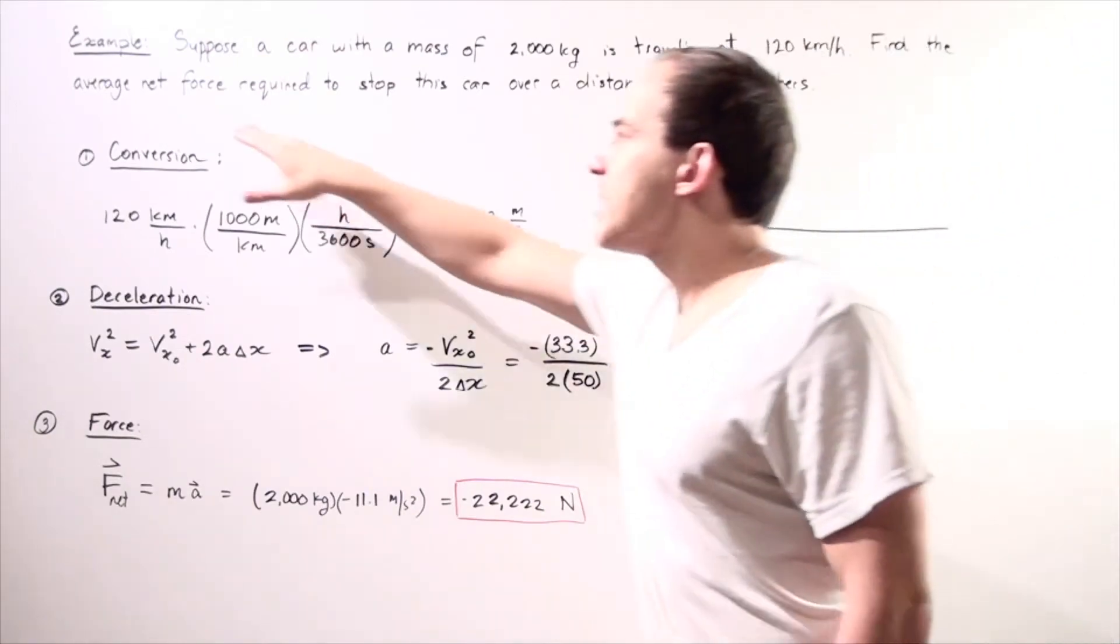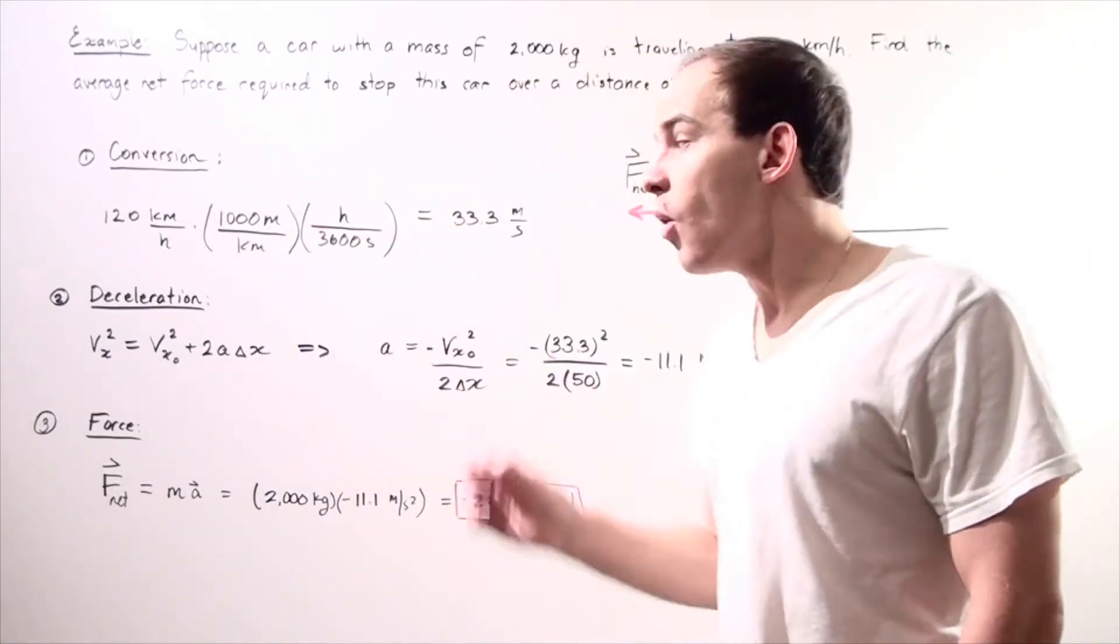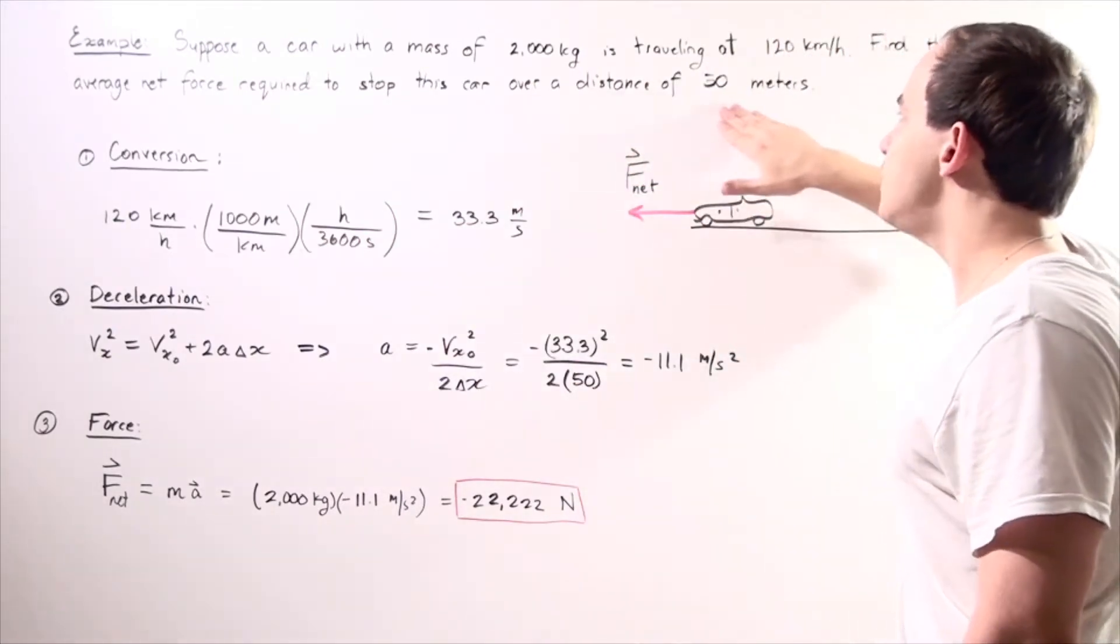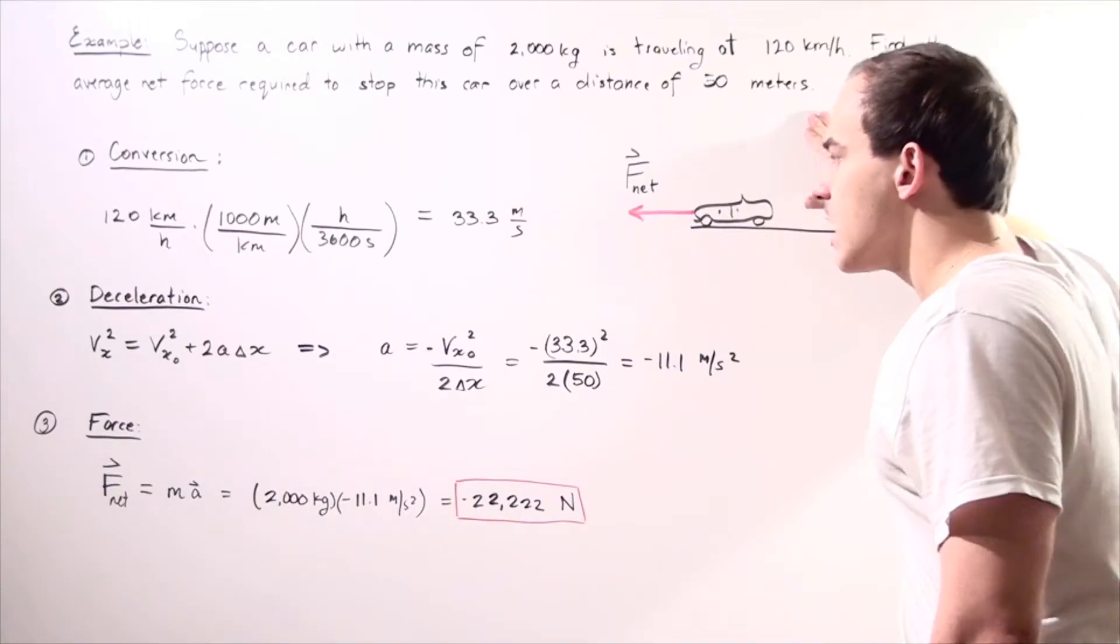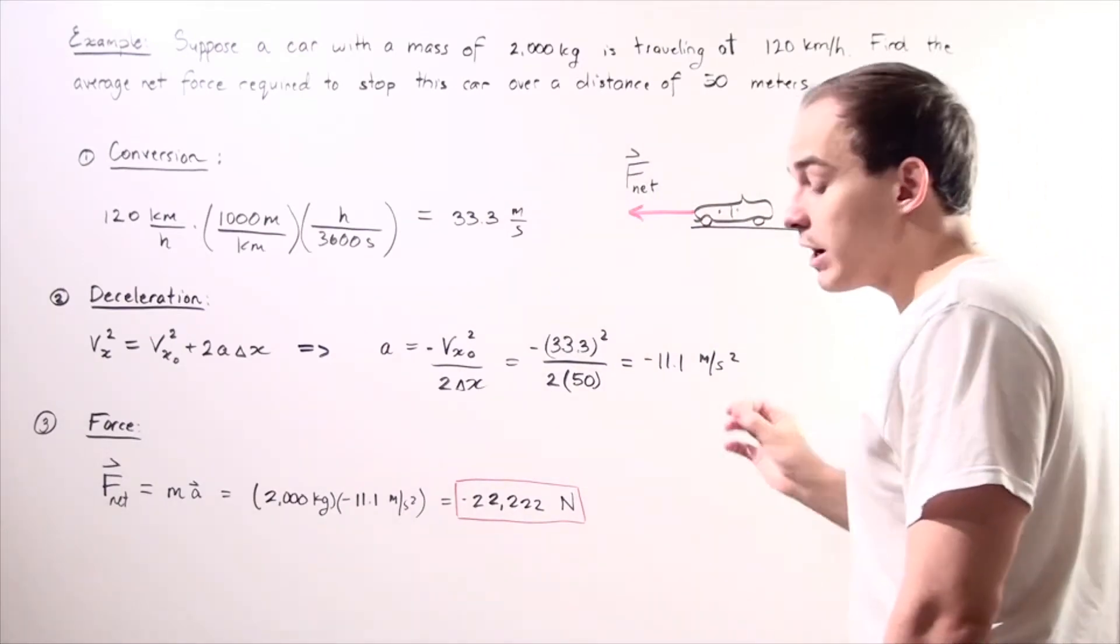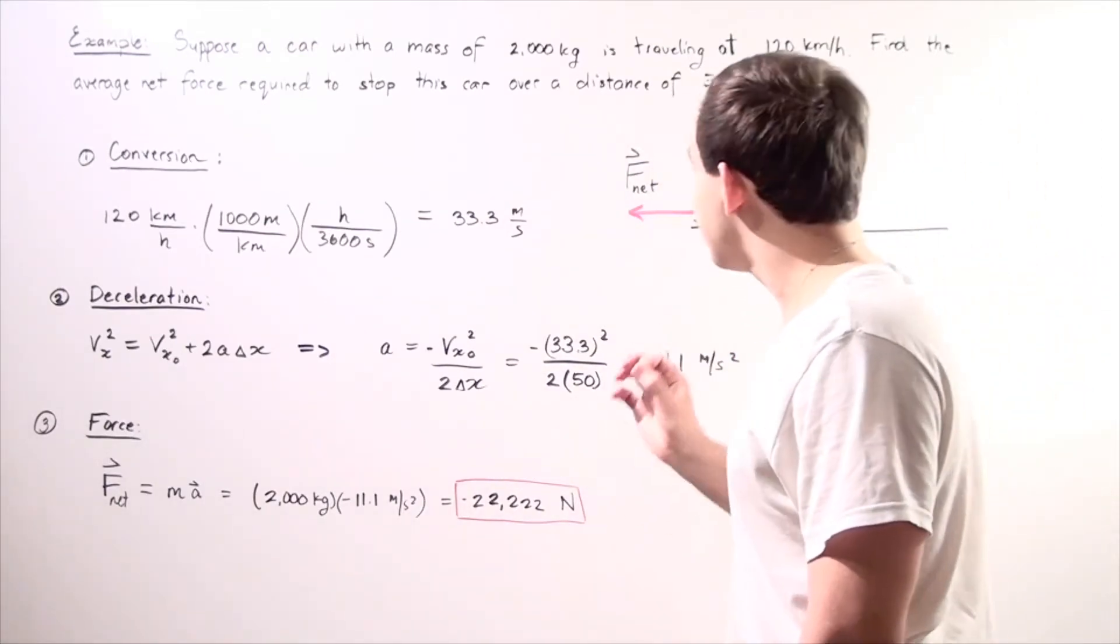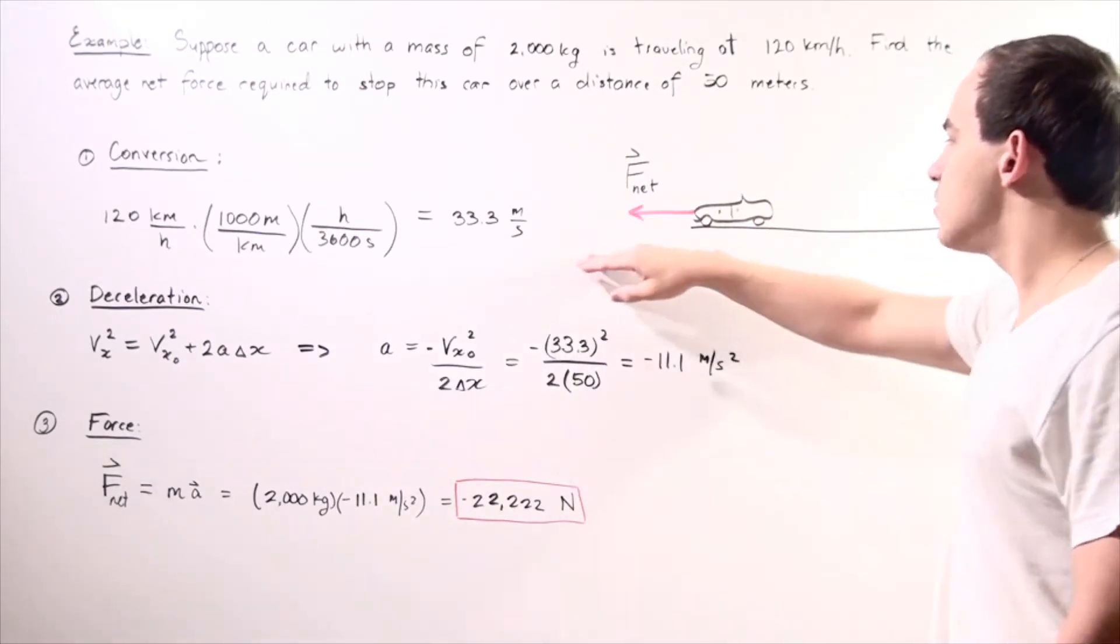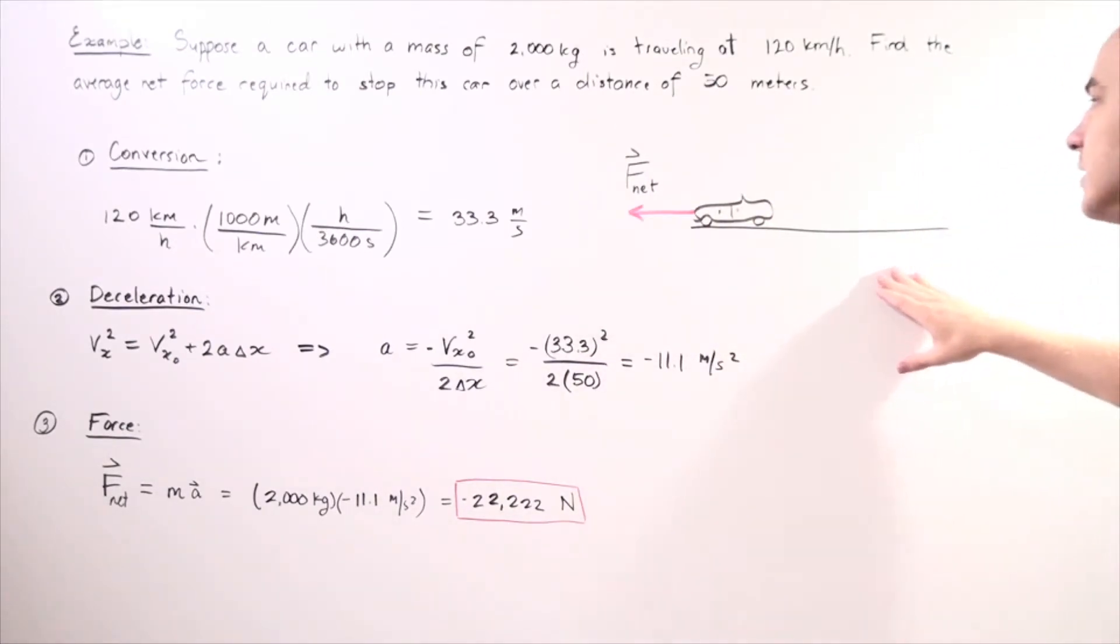We want to find the average net force required to stop this car over a distance of 50 meters. Recall that our first law of motion states that our car will continue to move as long as there's no net force acting on the object.